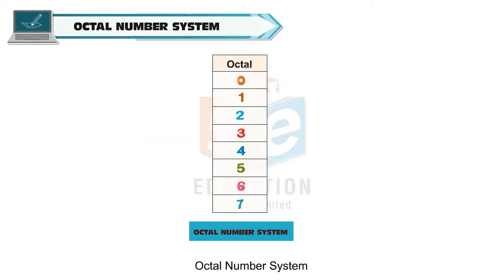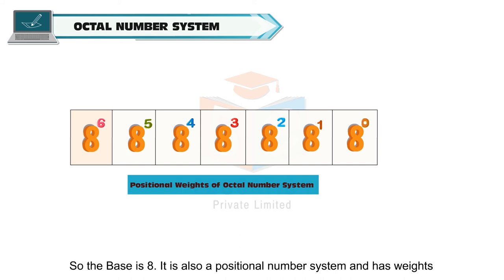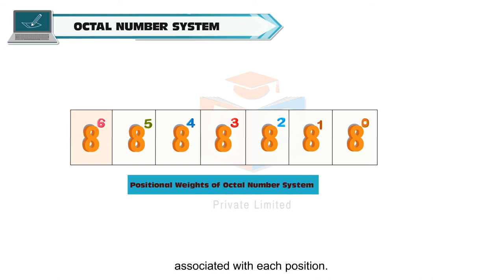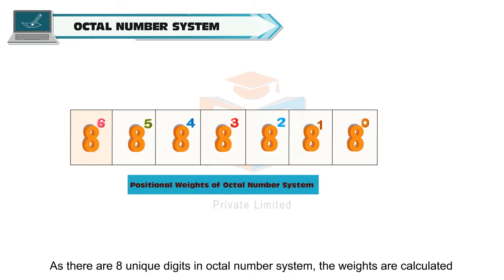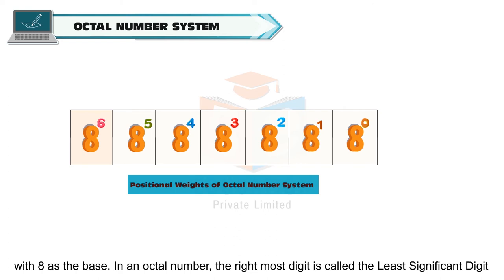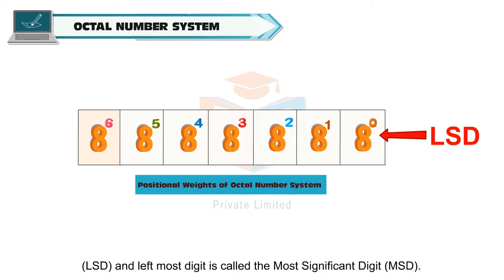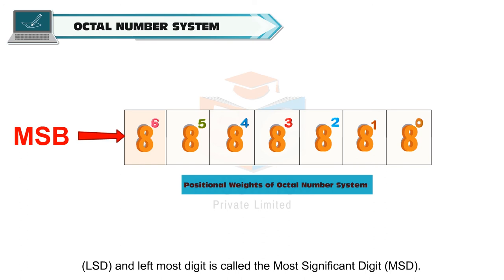Octal number system. Octal number system has 8 unique digits from 0 to 7. So, the base is 8. It is also a positional number system and has weights associated with each position. As there are 8 unique digits in the octal number system, the weights are calculated with 8 as the base. In an octal number, the rightmost digit is called the least significant digit or LSD, and the leftmost digit is called the most significant digit or MSD.